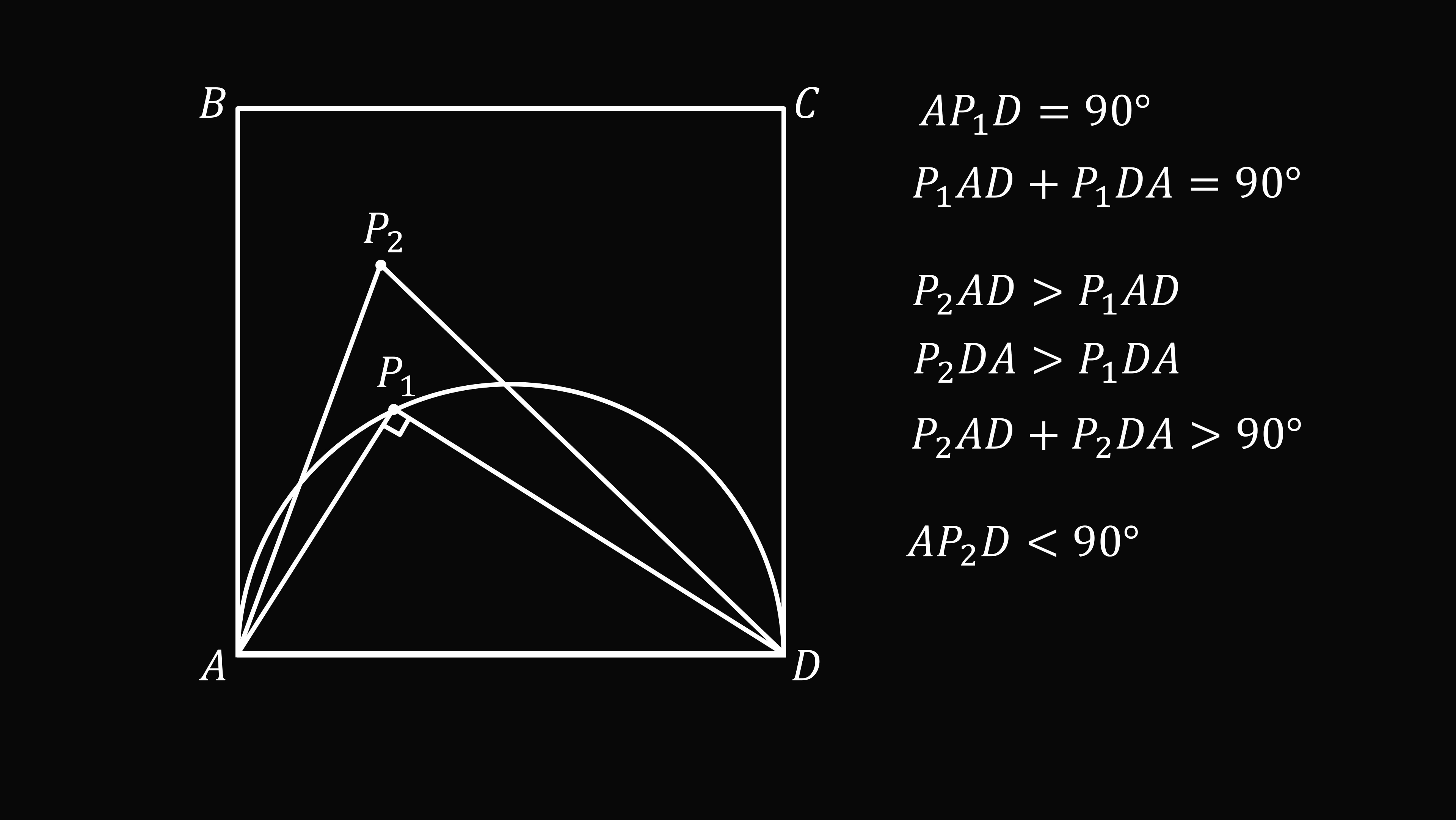That means that AP₂D must be less than 90 degrees, because the sum of the three angles in a triangle must be equal to 180 degrees. So in other words, if we have a point P₂ that's in the exterior of the semicircle, but in the interior of the square, it will be an acute angle.